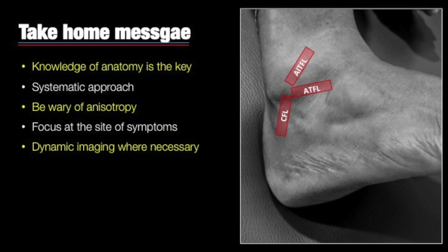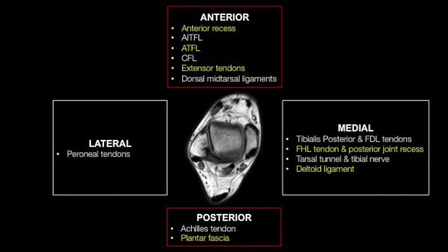The take-home message: when scanning the ankle or any joint, knowledge of anatomy is key. Use a systematic approach and you will not get lost. Be aware of anisotropy at various levels — at the Achilles tendon attachment and where the peroneal tendons curve around the lateral malleolus. Focus at the site of symptoms, since in musculoskeletal ultrasound findings are usually at the site of pain. Use dynamic imaging wherever necessary. Know the probe orientations for the anterior inferior tibiofibular ligament, the anterior talofibular ligament, and the calcaneofibular ligament — all structures mentioned in the ESSR guidelines. Thank you.